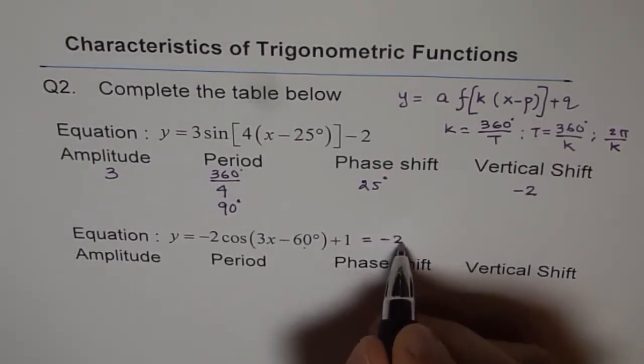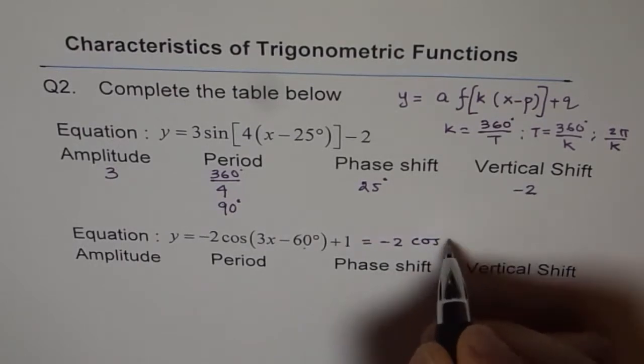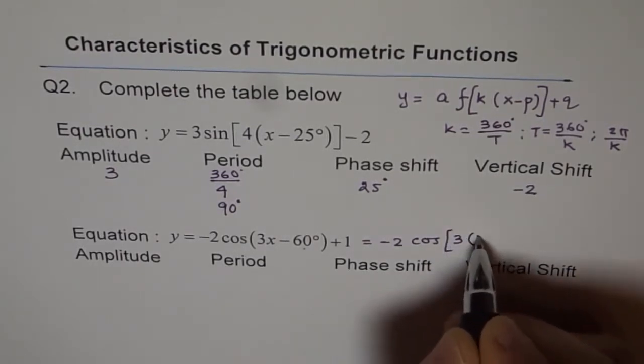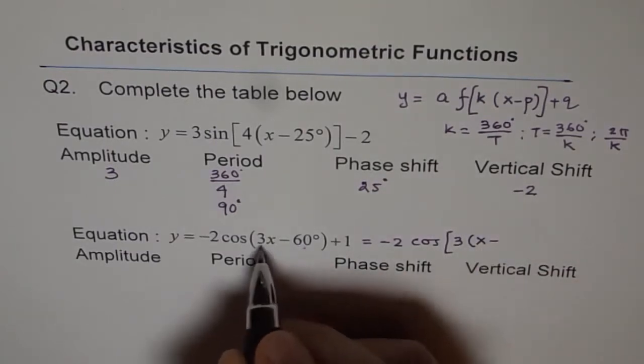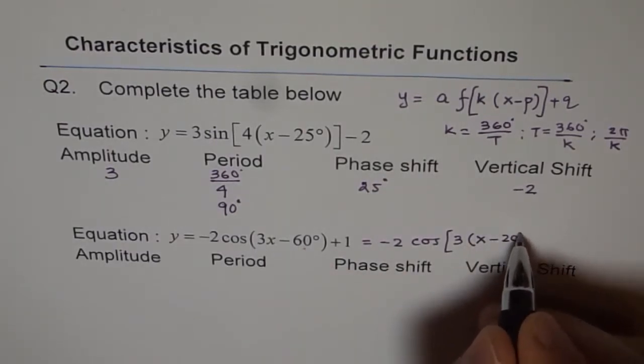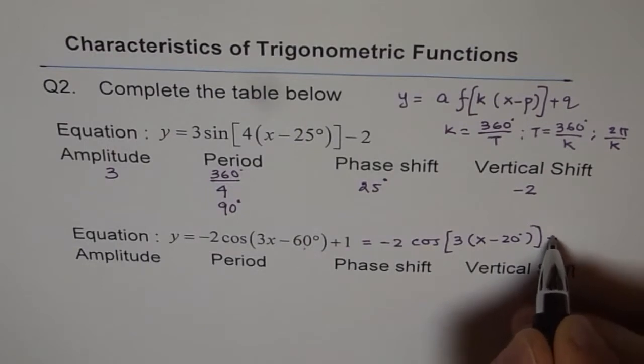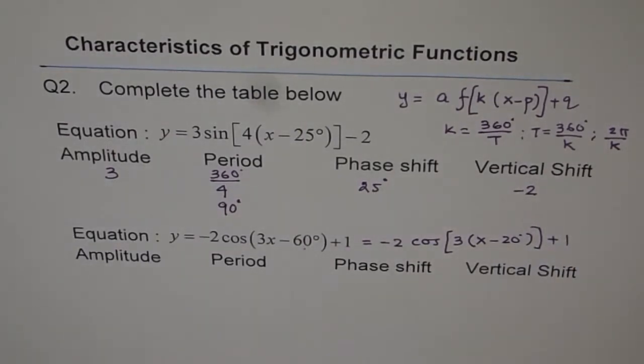We will write this as minus 2 cos of, so we will put a square bracket, factor 3 out. X minus 60 divided by 3 is 20 degrees. Do you see that? Plus 1. And now you should write down your values.